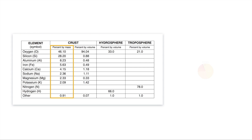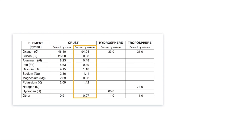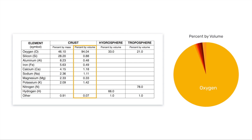If we were to draw this in a pie chart, we would see that oxygen and silicon, coming in at 46.1% and 28.2% respectively, make up the vast majority of the mass of the Earth's crust. If we look at it by volume, however, we see a slightly different picture — there's much less silicon and much more oxygen as far as percentages go, and that has to do with the relative weights of those elements.